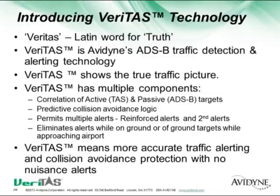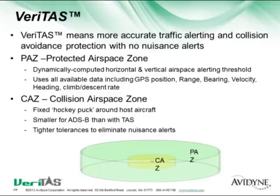So that's what VERITAS is about: more accurate traffic alerting and no nuisance alerts. There are two additional terms as part of VERITAS and ADS-B called PAS and CAS. CAS is the fixed hockey puck of space around your airplane, and PAS is the dynamically computed protection zone around the airplane based on your speed, velocity, direction, and whether you're turning, climbing, or descending.